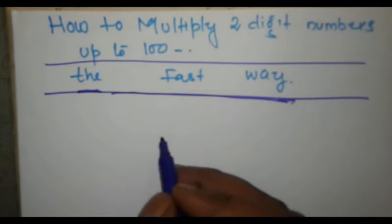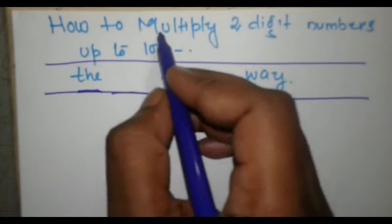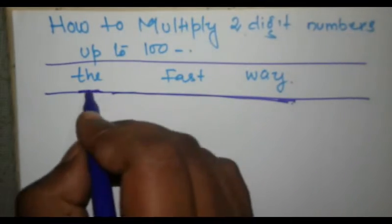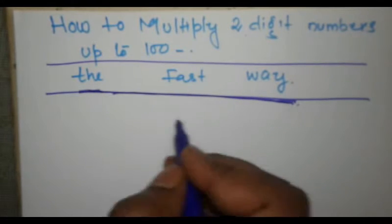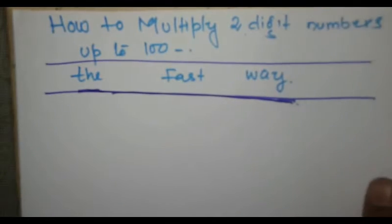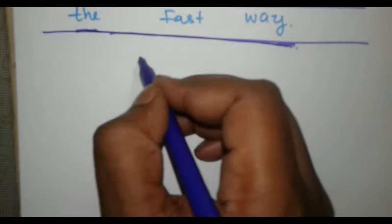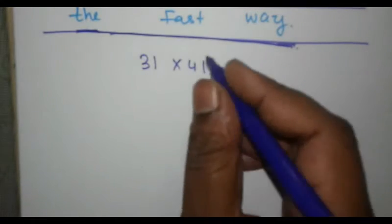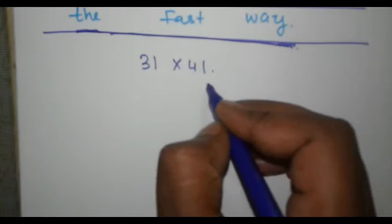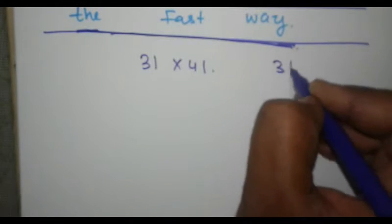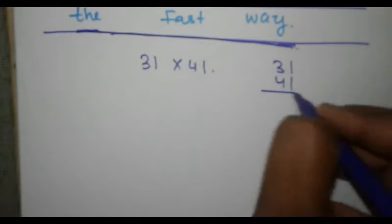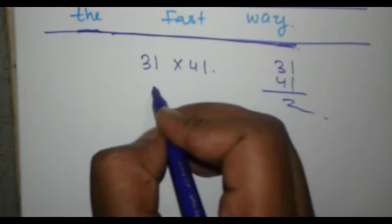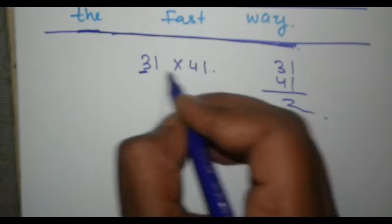Hello everyone, today we are going to learn about how to multiply two-digit numbers up to a hundred, and I am going to show you the best way. Let's start with an example: 31 into 41. What will be the result? If you go with the traditional way, you have to do many steps, but here it's very simple.